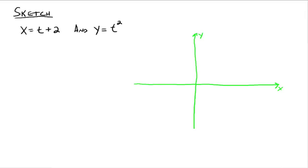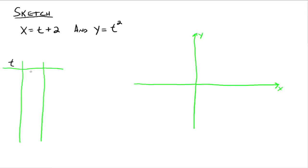Essentially what we have here are three variables, with t being the parameter. A lot of times t can represent time — time equals zero, this is where we'd be for x and for y; time equals five, same idea. So when we go to sketch this, we're going to come up with ordered pairs to plot using a t-chart. Our t-chart is going to have a t column, an x column, and a y column. We choose numbers for t, and that tells us what x and y need to be.